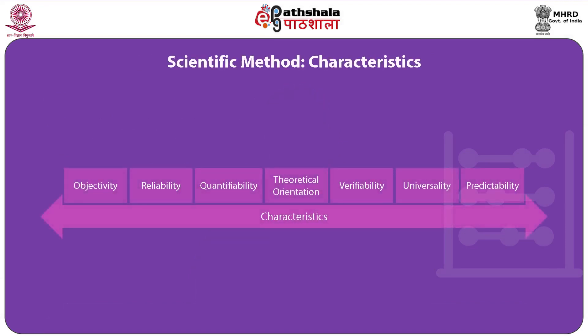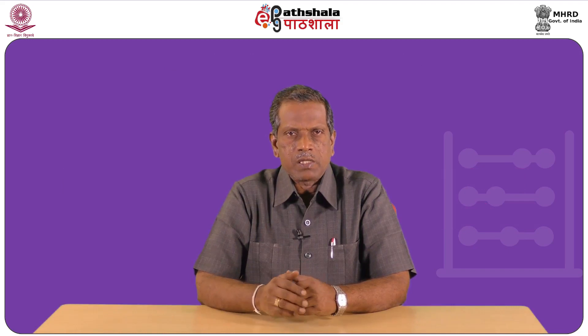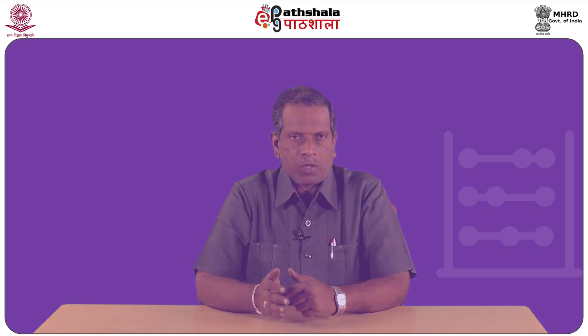Before understanding the scientific method very well, we would like to focus on the characteristics of scientific method. The first and foremost characteristic is objectivity. The researcher should be impartial in studying the subject matter under consideration. In social sciences, maintaining objectivity is difficult, but many techniques have been developed to avoid subjectivity at different stages of the research process.